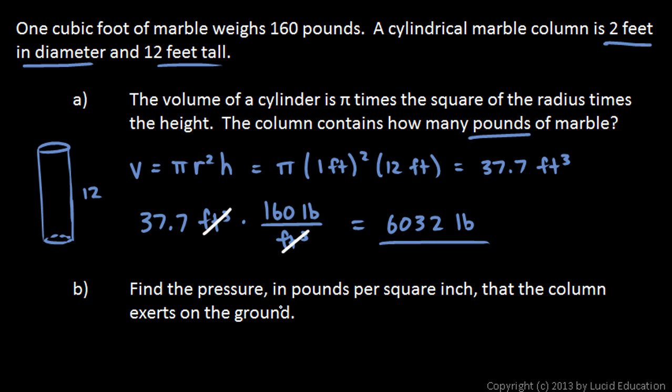Then we're told to find the pressure in pounds per square inch, now notice inches here now, pounds per square inch, that the column exerts on the ground. This column is 2 feet in diameter. So that means the radius of the column is 1 foot, and I'm going to write that as 12 inches. That's the radius of this column.